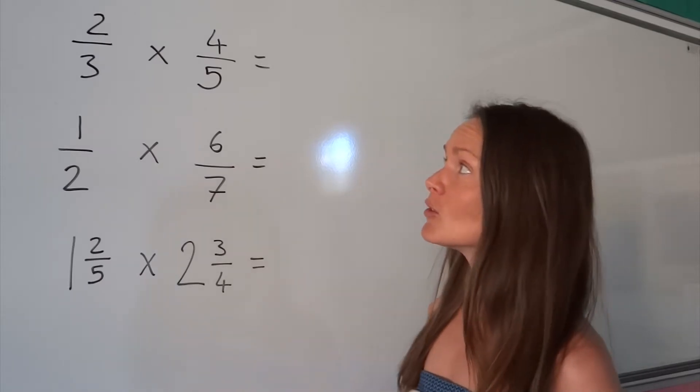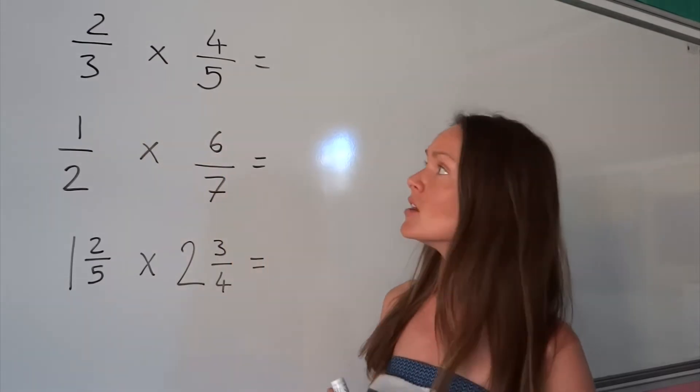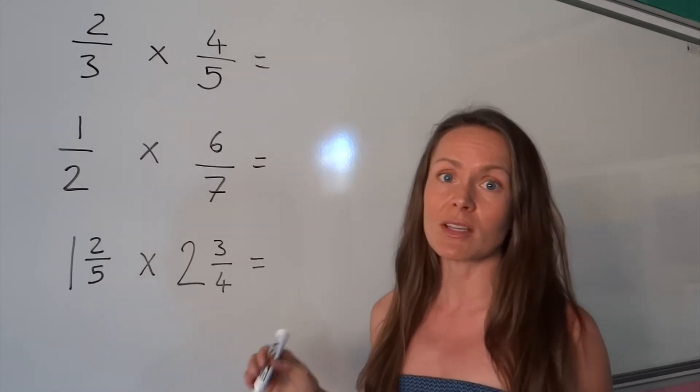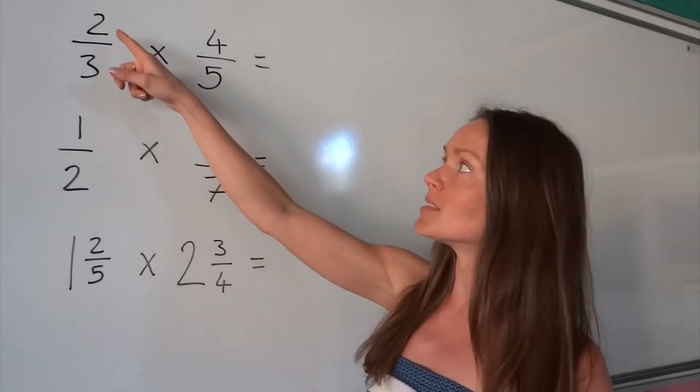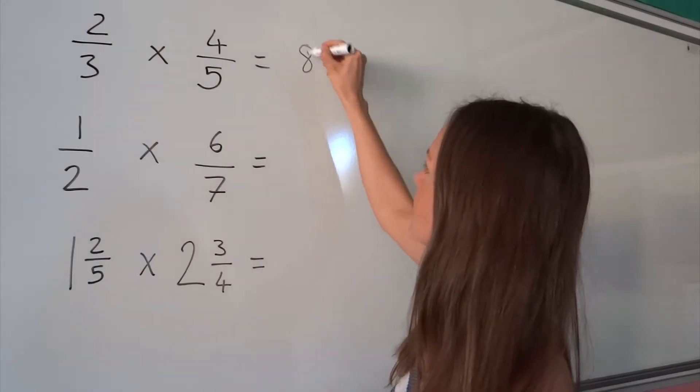So let's have a look at the first example: 2 thirds multiplied by 4 fifths. So to find the top number, the numerator, in this question, all I have to do is multiply the top two numbers together here. So 2 multiplied by 4 is 8.